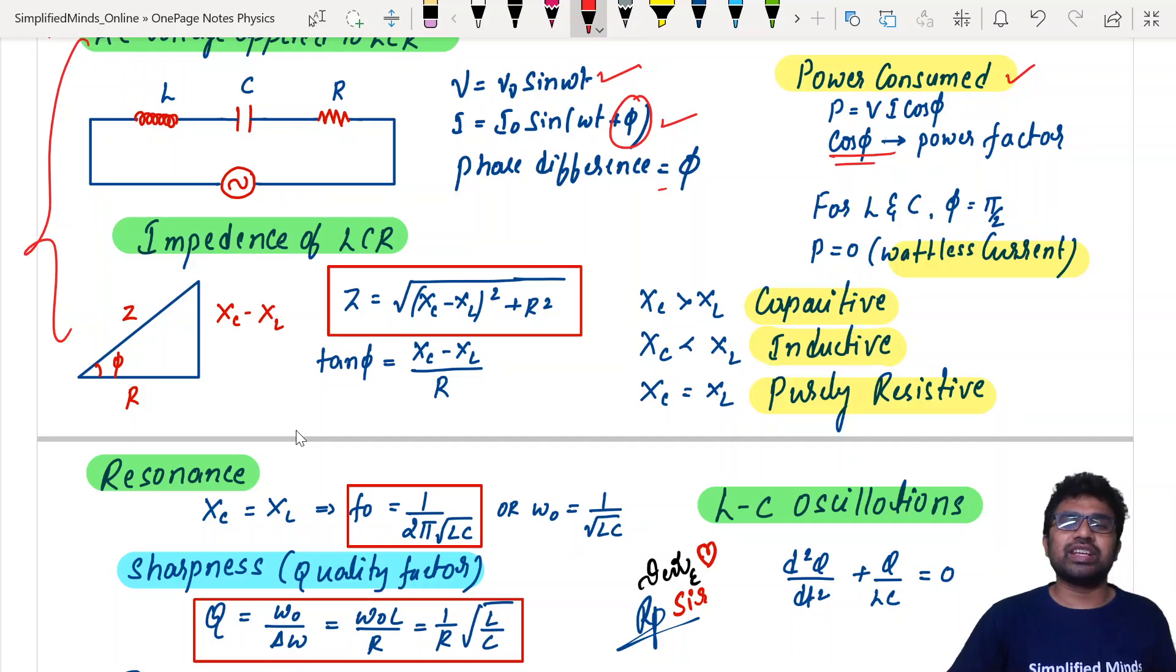For L and C circuit, you know that phi is pi by 2. If you substitute that, the answer is 0. Therefore it will be wattless current. This is an important mechanism actually.